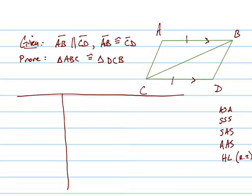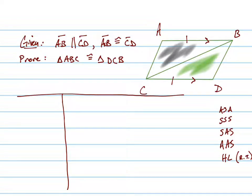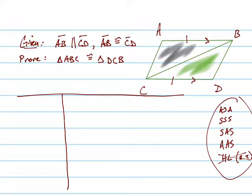To prove that these two triangles are congruent — that one is congruent to that one right there — we need to use one of these triangle congruence properties. Since this is not a right triangle, we're not going to use HL. We have to use either angle-side-angle, side-side-side, side-angle-side, or angle-angle-side.